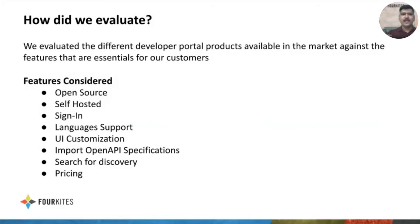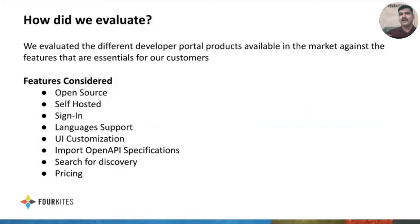We also considered language support in the developer portal, highlighting the languages our customers use — Java, Ruby, Go, curl, and others. It should support a variety of languages so customers can copy and paste the code we provide. A good UX is also crucial to make the experience more delightful. Content creation should be easy, allowing internal teams to populate the developer portal simply by importing API specs like Swagger or OpenAPI specs.